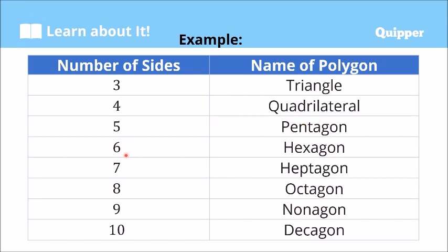If it has six sides, we call that hexagon. If the polygon has seven sides, we call that heptagon. Remember: for six, think of hex — it has an 'x'. For seven, that's heptagon.